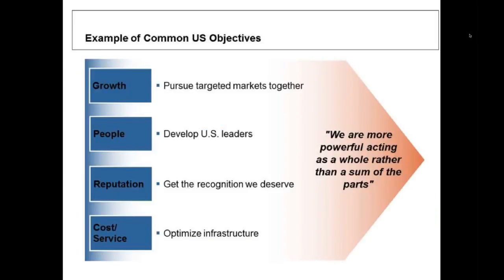We start this process by starting with goals. Goals are things like growth, people development, reputation, cost, and services. An important point: don't have risks or controls unless you link them to business objectives. Otherwise you might be mitigating a risk that has nothing to do with your business. We all have to follow financial reporting guidelines, but that's part of our goal to be compliant.